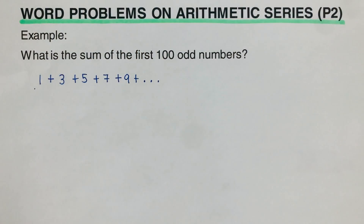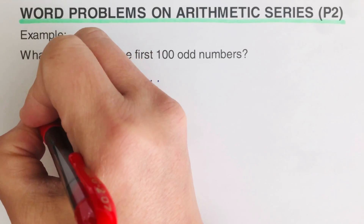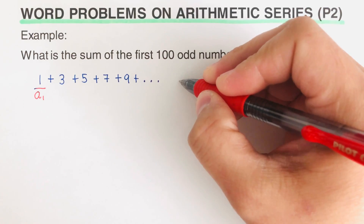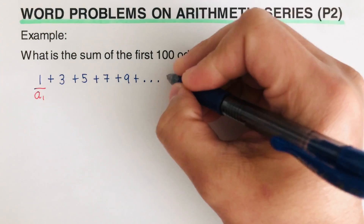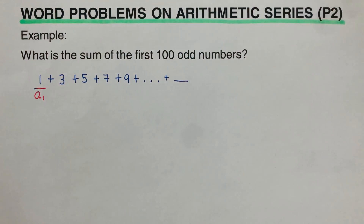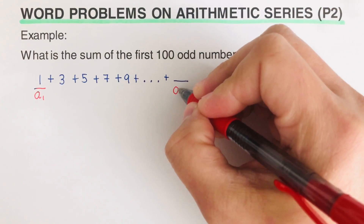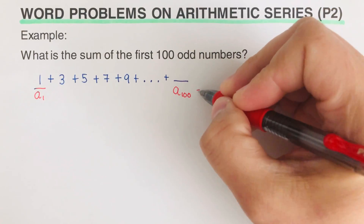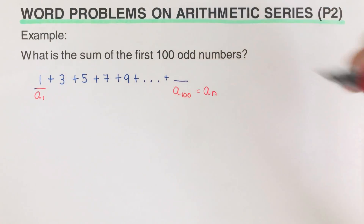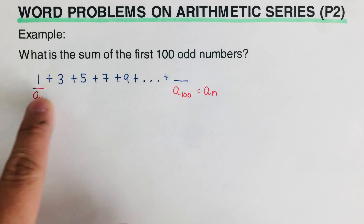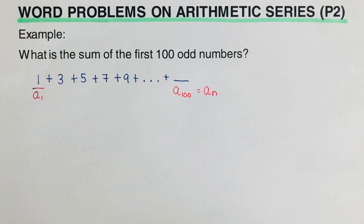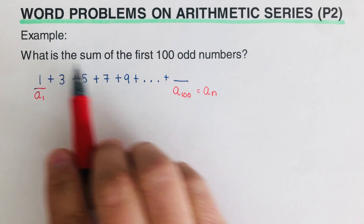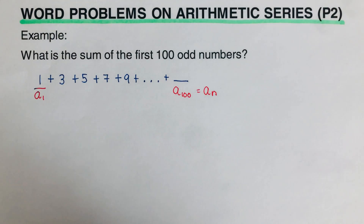We call this a sub 1 — that represents our first term. On the other end, we write a sub 100, because we are asked about the first 100 odd numbers. We can also represent this as a sub n, where a sub 1 is the first term and a sub n is the last term. What we're going to do is add all of these up to find the sum.